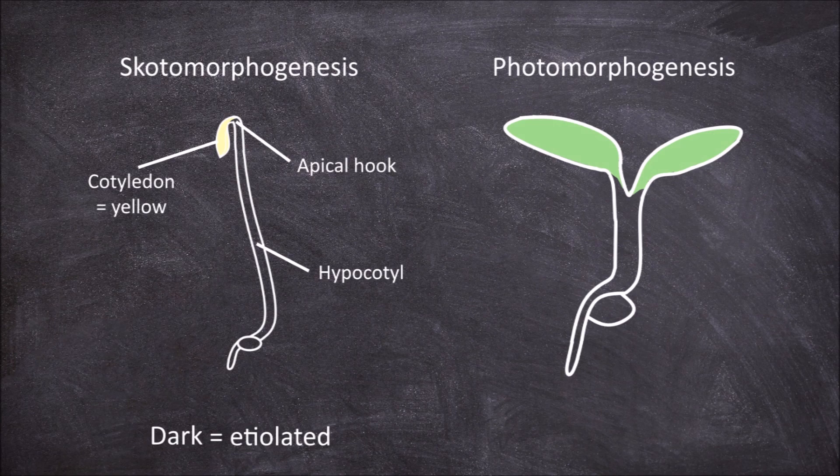Photomorphogenesis is when a seedling develops in the light. Seedlings that have undergone growth in the presence of light are described as being a deetiolated seedling.